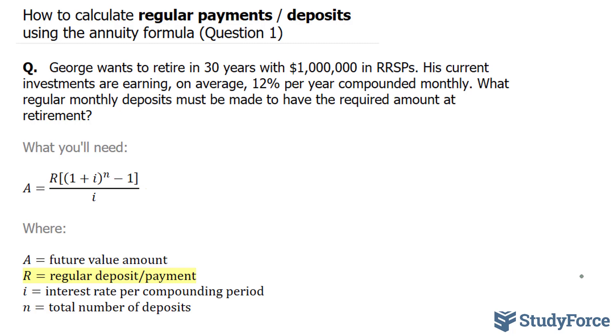R represents the regular deposits or payments which is what we're looking for, i is the interest rate per compounding period and n is the total number of deposits. Now we are told that he wants to have 1 million dollars at the end of the 30 years. So his A value will equal 1 million.